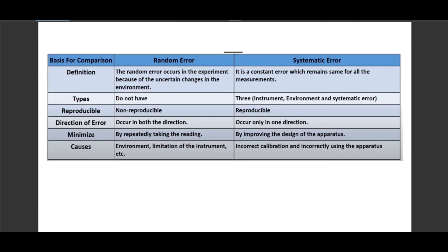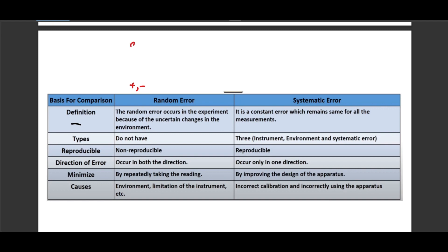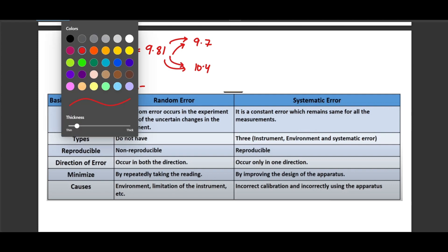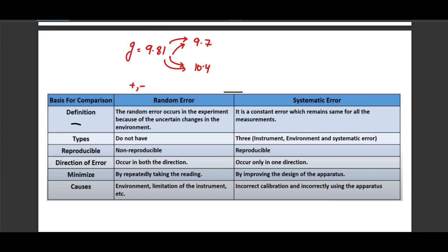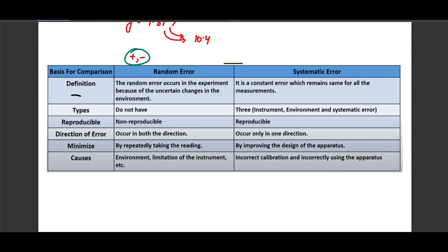We start with a brief summary of random and systematic errors. Random errors are unpredictable — you can't predict what the outcome will be. Sometimes the error goes positive, sometimes negative. For example, if you measure the value of g in a laboratory, you might get 9.81, then 9.7, then 10.4. You keep repeating the experiment and realize that the error is not consistent in its contribution to the final value.